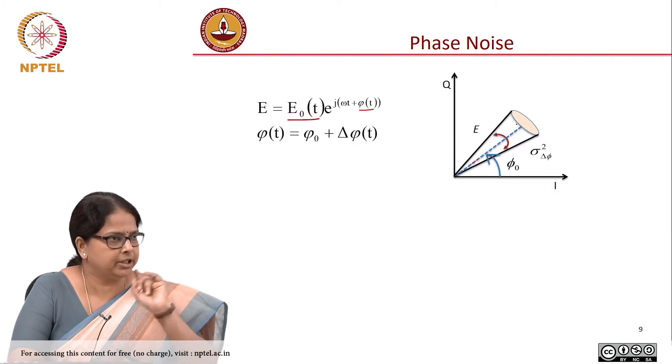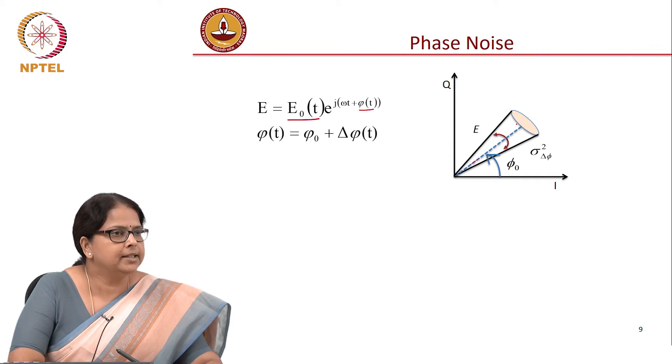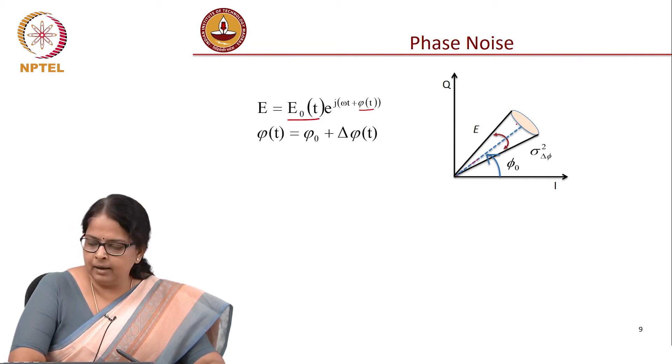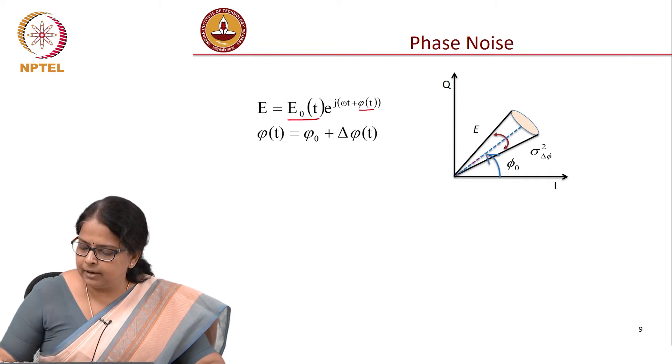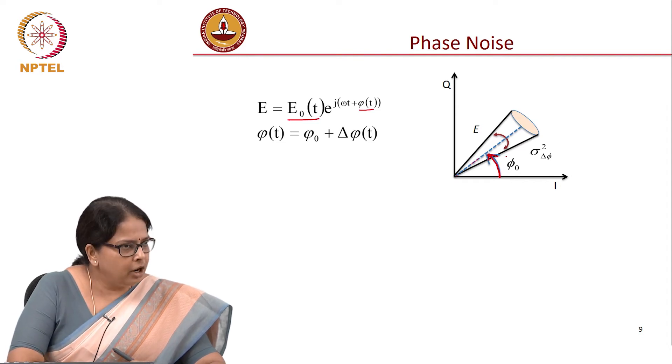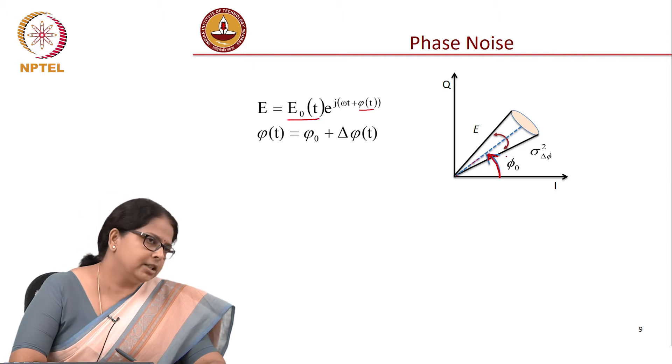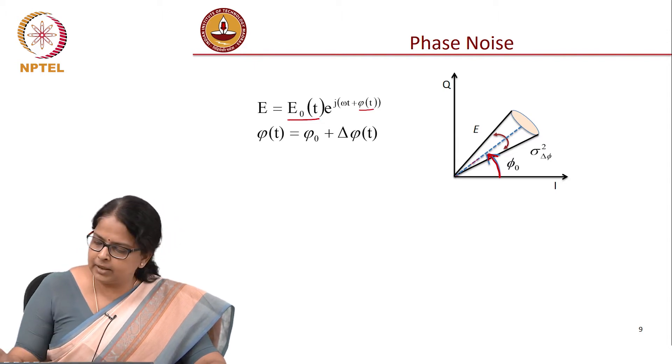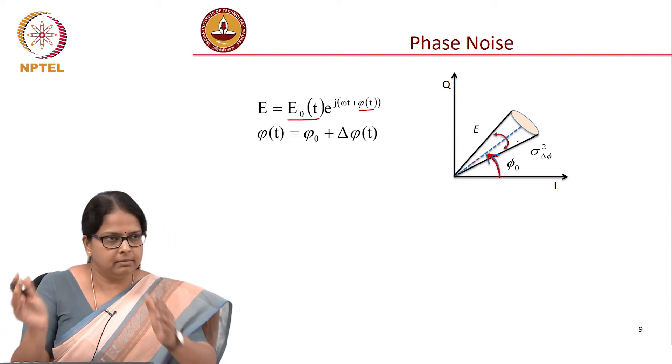not omega t rotation we are not considering, just the phasor of it with a given specific phi naught. Noise would mean that this phi is changing with time, which means this phasor is moving in between these two bounds.